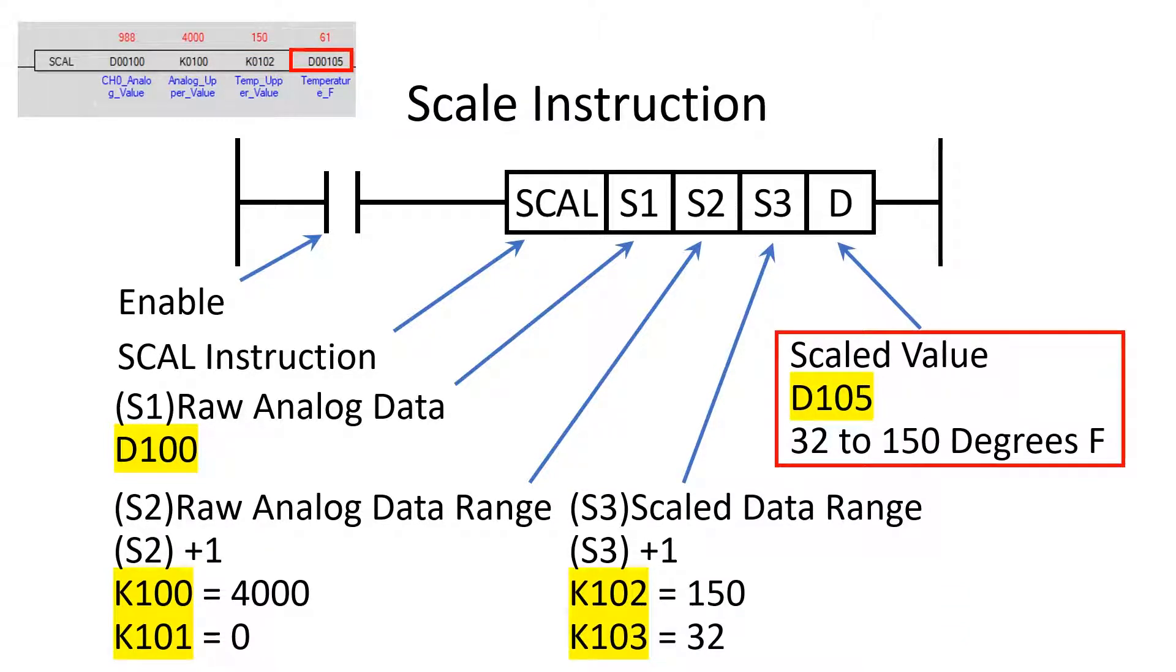Operand D stores the scale value from the analog device. In this case, it is a temperature value stored in the memory location D105.